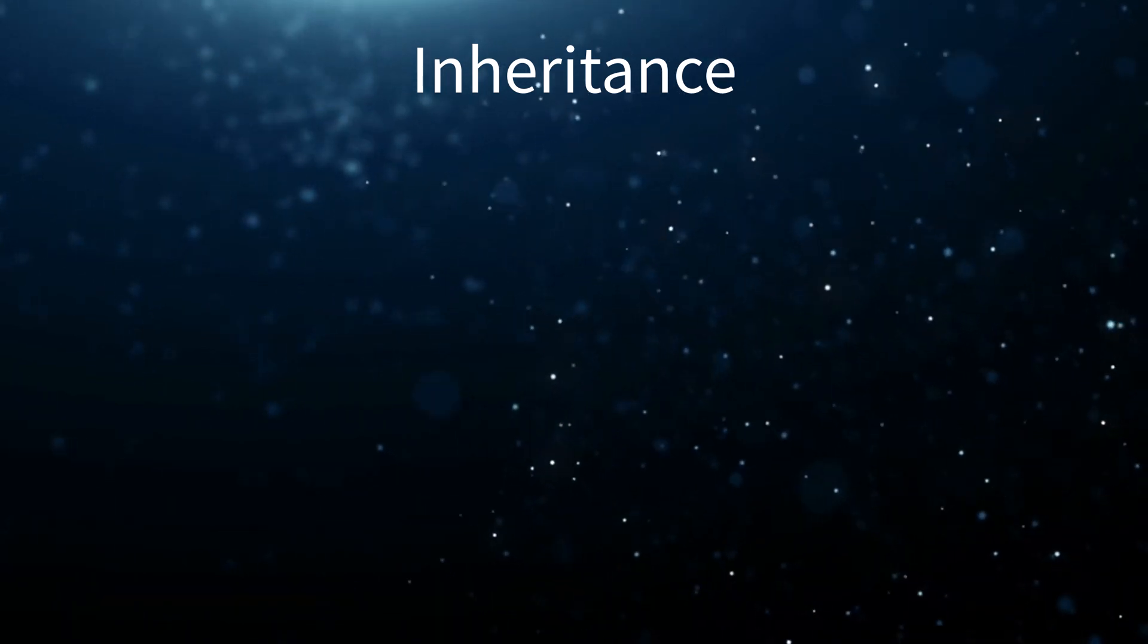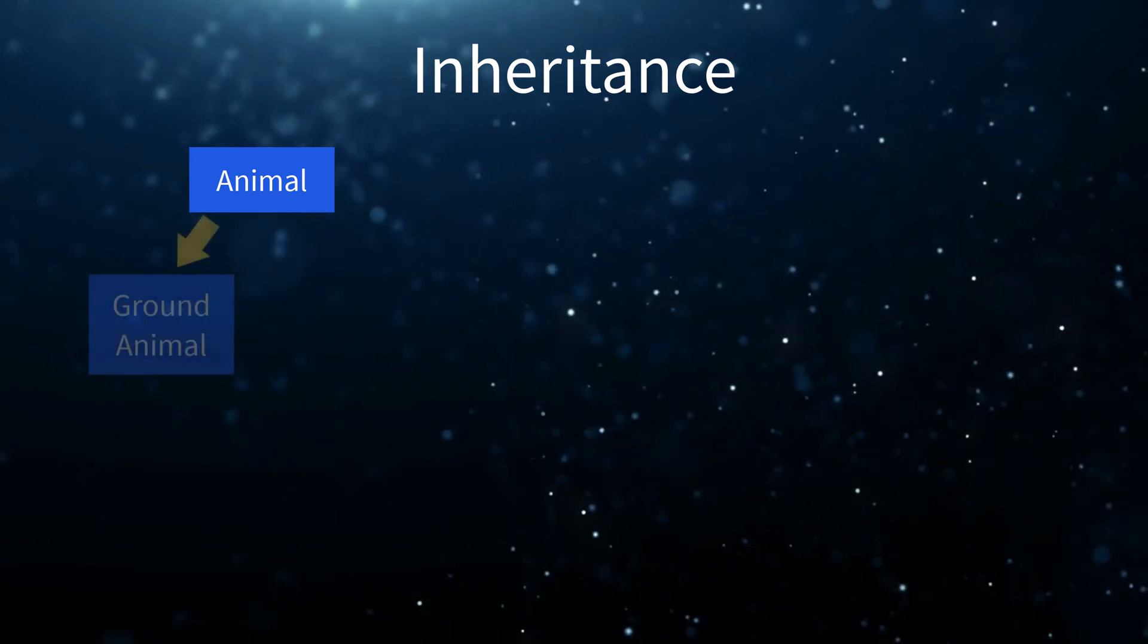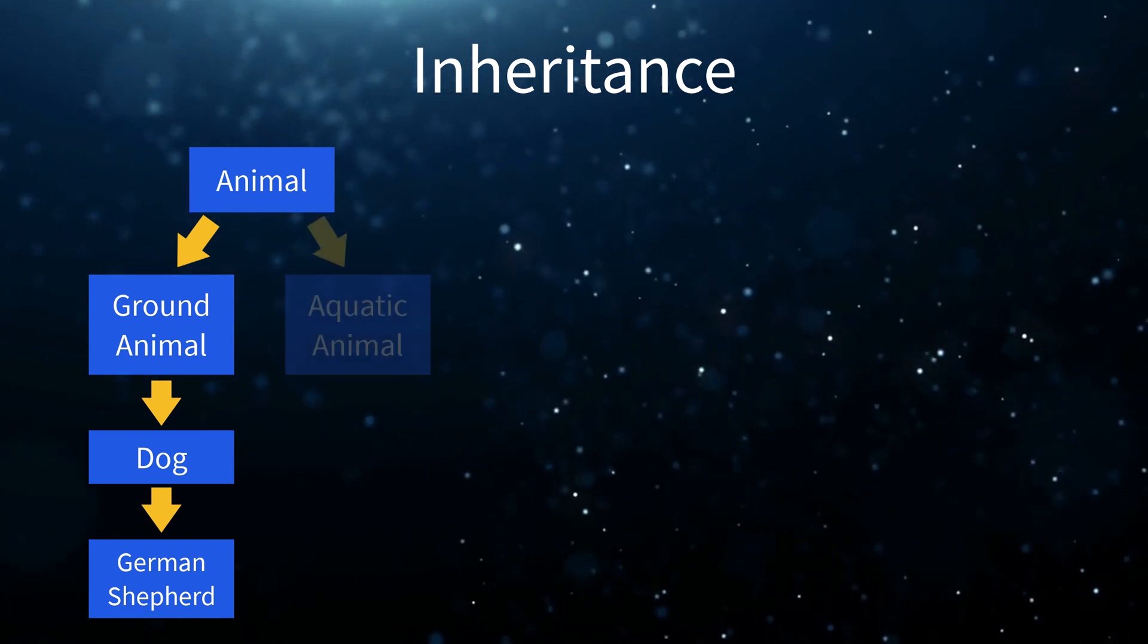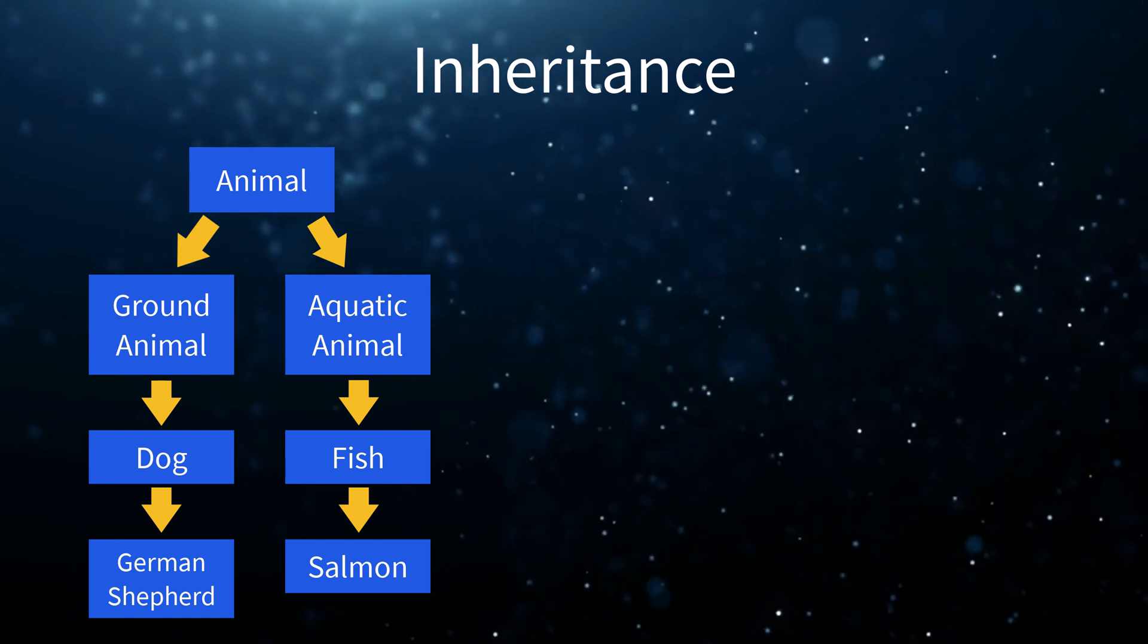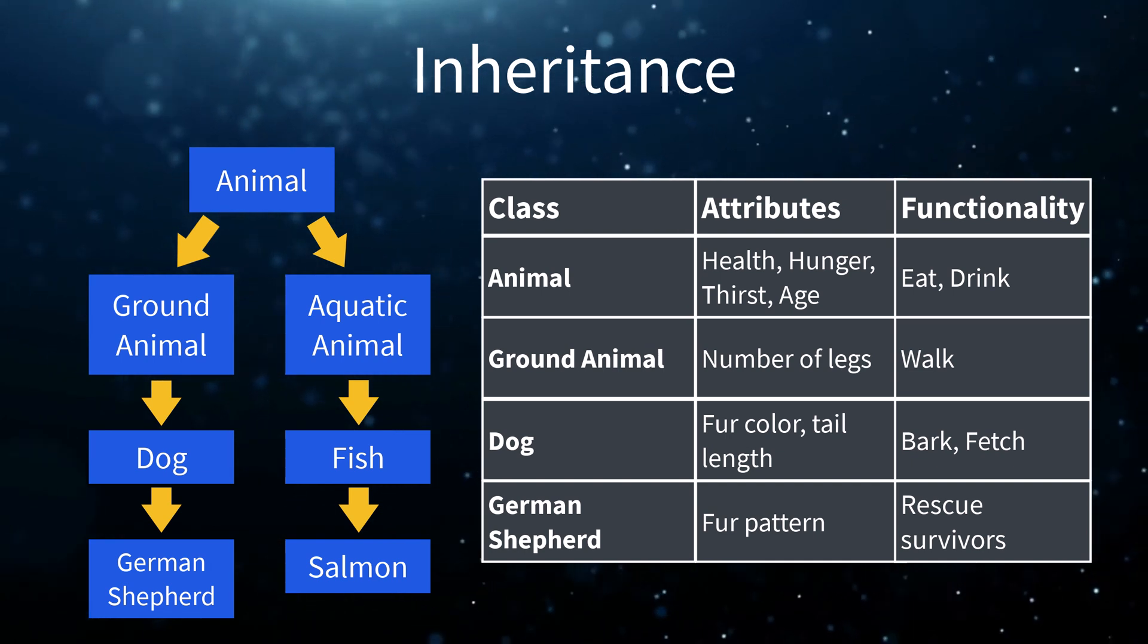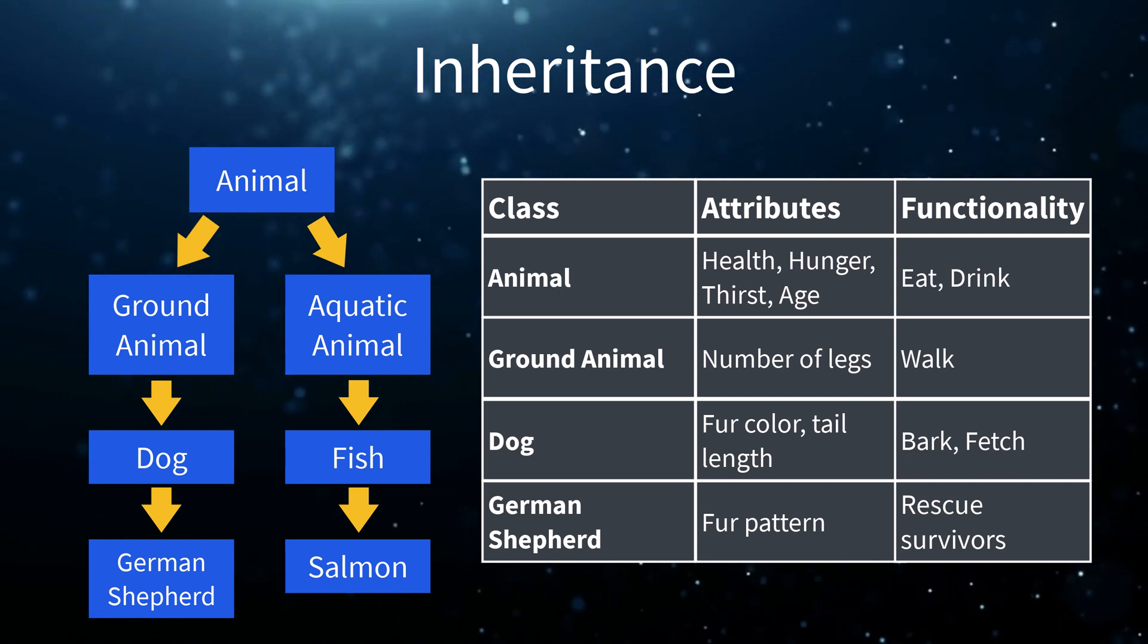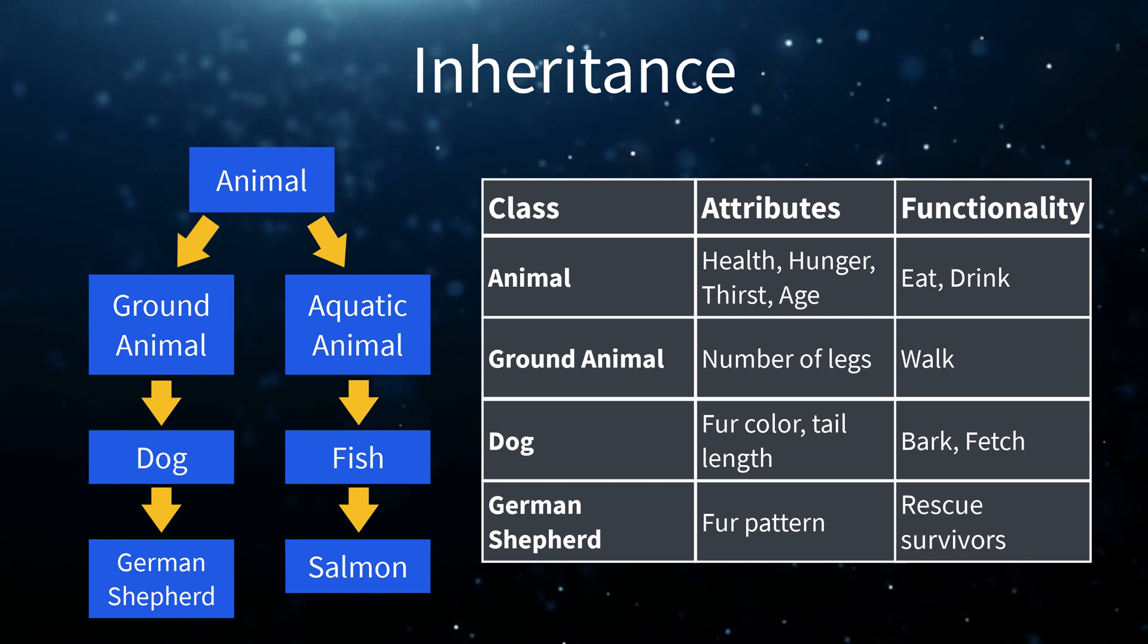Now, let's look at a more complex example. We could start with an animal class, as before. Then, we could go to a ground animal class, then a dog class, then a German Shepherd class. We could then do the same for aquatic animals by going aquatic animal, fish, and salmon. And for each class we create, we could define its attributes and functionality like so. As you can see on the table, as we go down the hierarchy of animal classes, the attributes and functionality become more and more specific to each child class. But always remember that each child class inherits the information from its parent. In this example, the German Shepherd class inherits all the attributes and functionality from animal, ground animal, and dog classes.